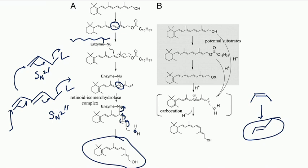Another mechanism is via ionization without nucleophilic attack — releasing the leaving group gives a very stable allylic carbocation with many resonating structures. One resonating structure has no double bond at that position, allowing free rotation to the cis geometry, then water attacks the terminal carbon. These are the two mechanisms proposed for the trans-retinol to 11-cis retinol conversion.